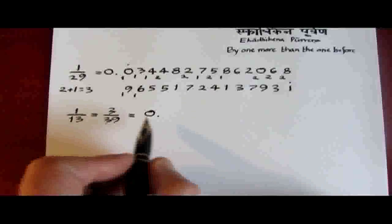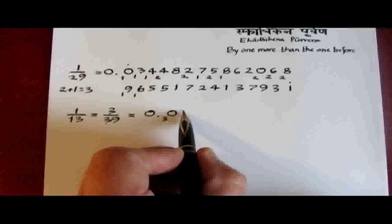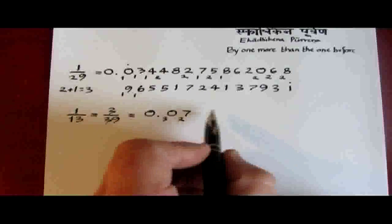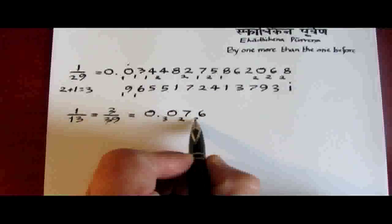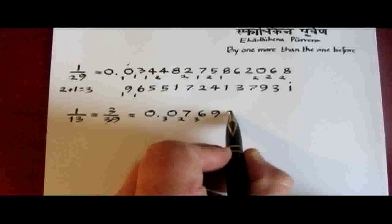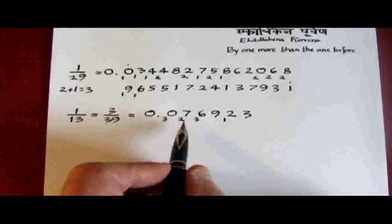4 divided into 3 goes 0, remainder 3. 4 into 30 is 7, remainder 2. 4 into 27 goes 6, remainder 3. And then 9, 2, remainder 1. 4 into 12, 3. And we're back at the start.